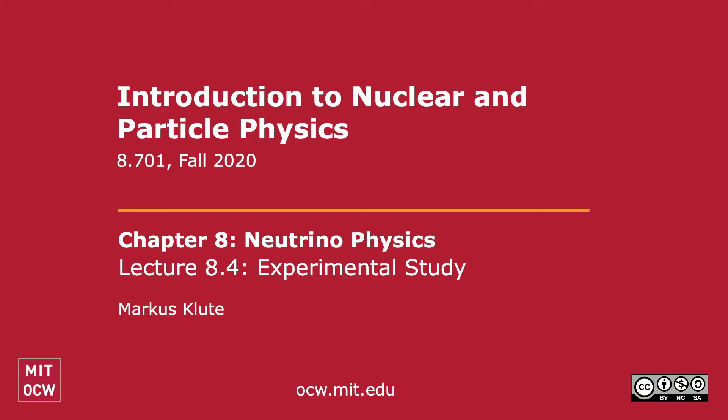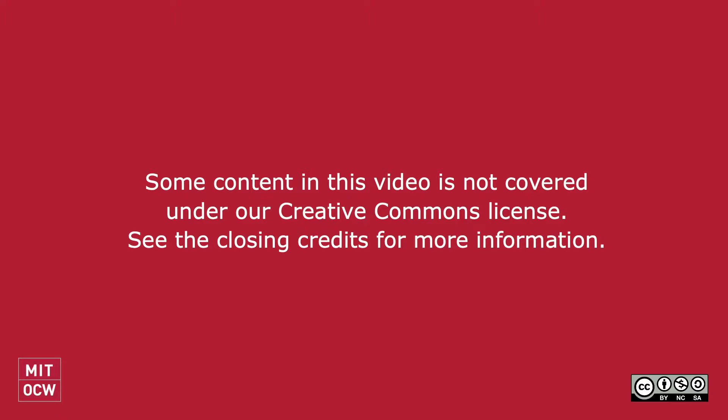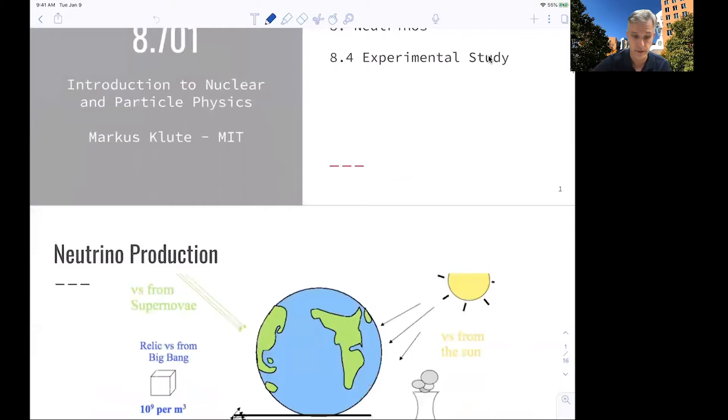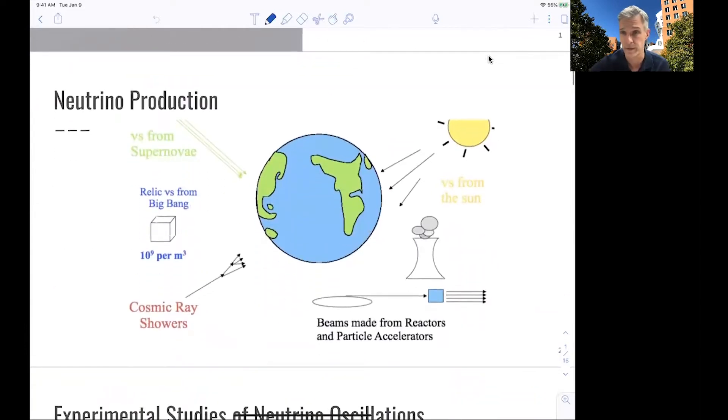Welcome back to 8.701. In this video, we want to look at experimental studies of neutrino oscillations. The first question is, where do we get the neutrinos? How do we produce the neutrinos? The answer is there's numerous sources for neutrinos.